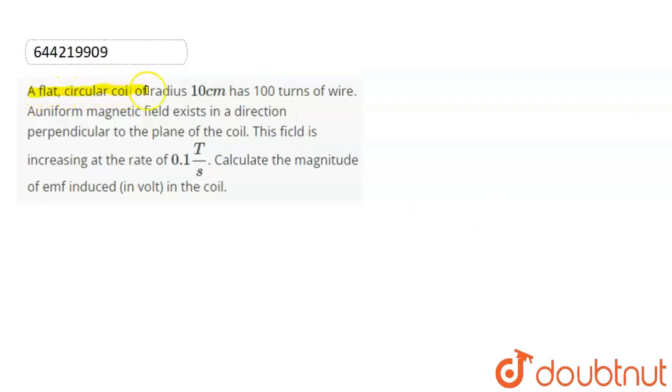A flat circular coil of radius 10 cm has 100 turns of wire. A uniform magnetic field exists in a direction perpendicular to the plane of the coil. The field is increasing at a rate of 0.1 tesla per second. Calculate the magnitude of EMF induced in the coil.